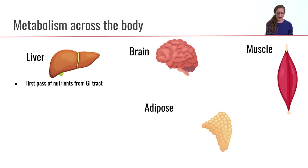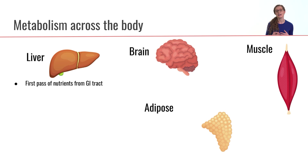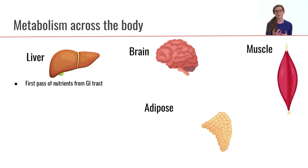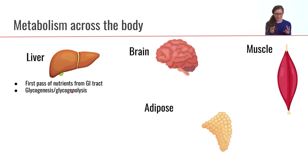Starting off in the liver — first of all, the liver gets the first pass of nutrients from the gastrointestinal tract. If we think back to our first lecture on the GI tract, we remember that all the carbohydrates and proteins that were absorbed across the enterocyte directly into the bloodstream, that blood went straight to the liver before it goes to the rest of the body. And that allows the liver to take up the first dose of carbohydrates and proteins that we have digested from our food.